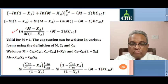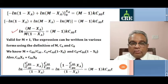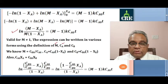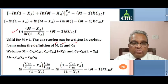If we substitute M equals 1, the right hand side becomes 0, making the integrated form indeterminate. The expression can be written in various forms using the definitions of M, CA and CB. We know M equals CB0 by CA0, CA equals CA0 into (1 minus XA), and CB equals CB0 into (1 minus XB).